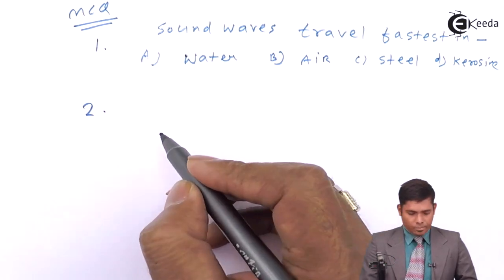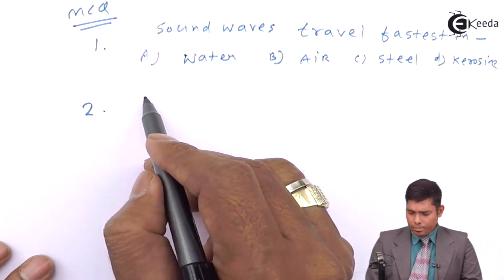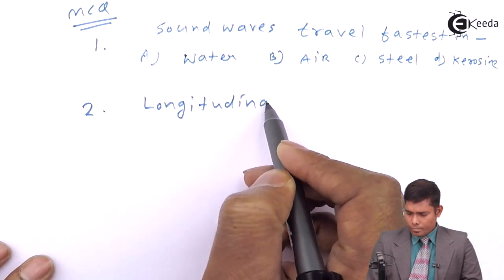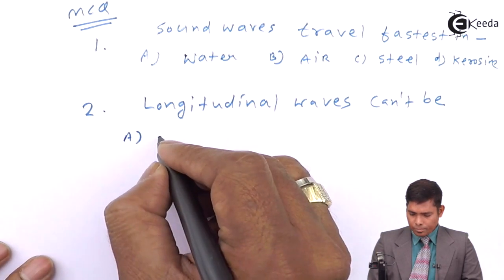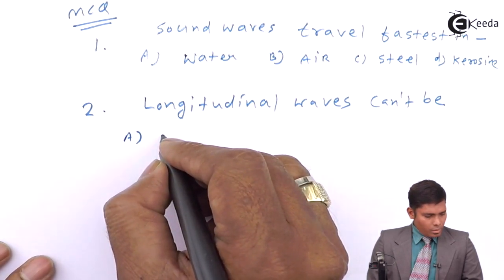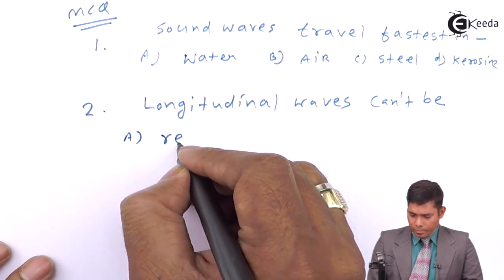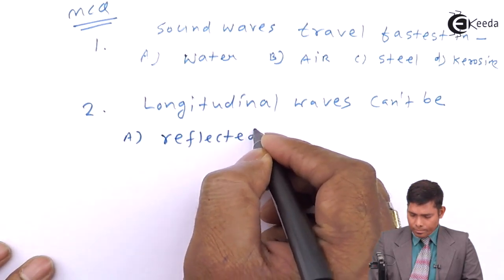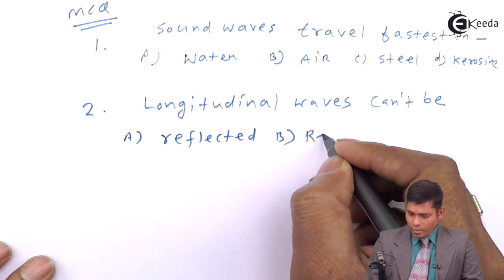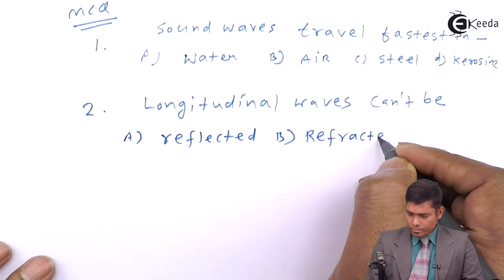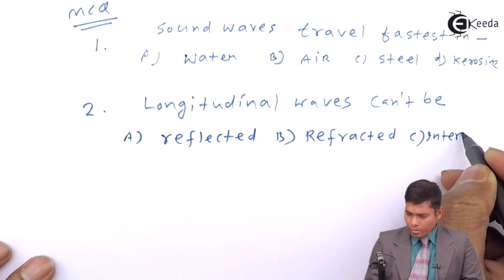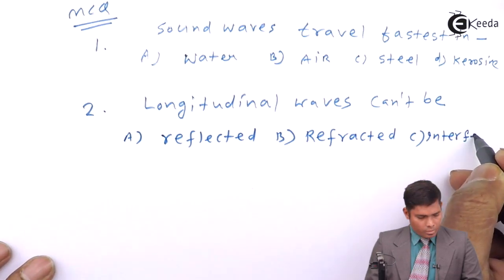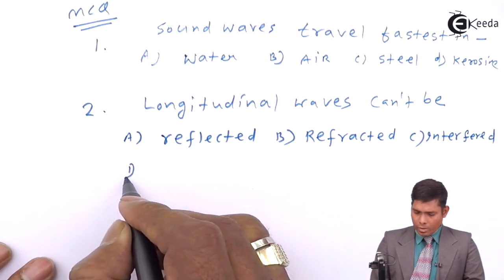Second, longitudinal waves cannot be. Options are reflected, refracted, interfered, polarized.